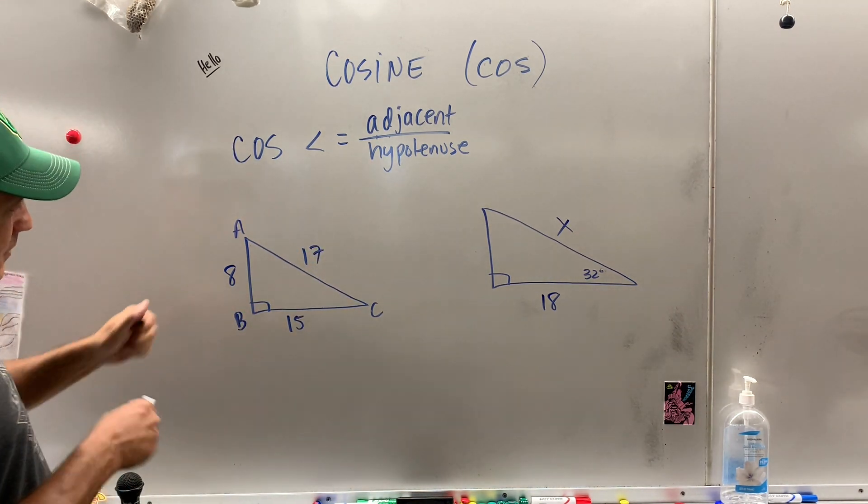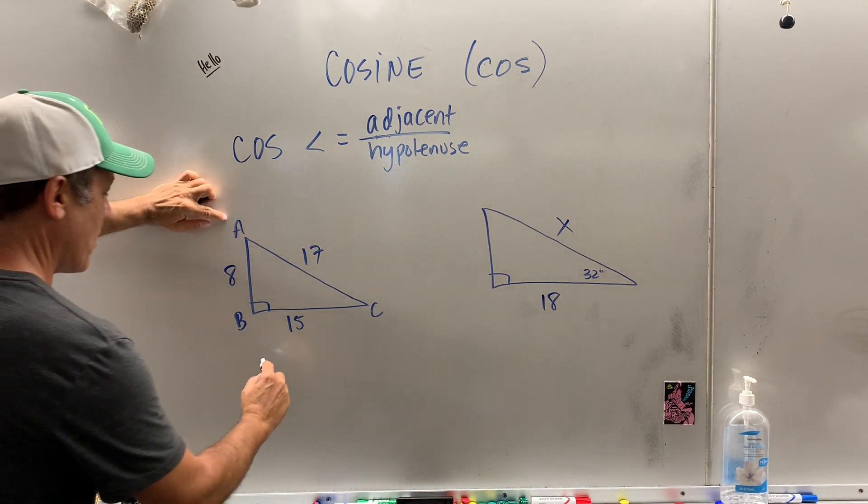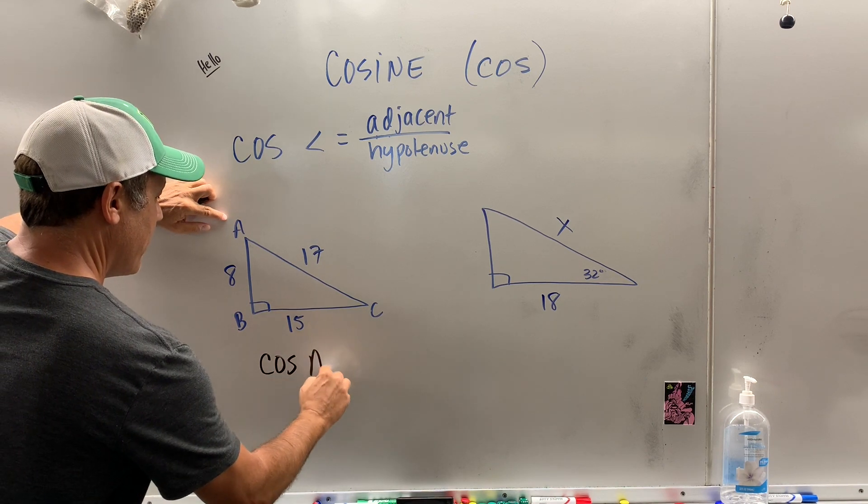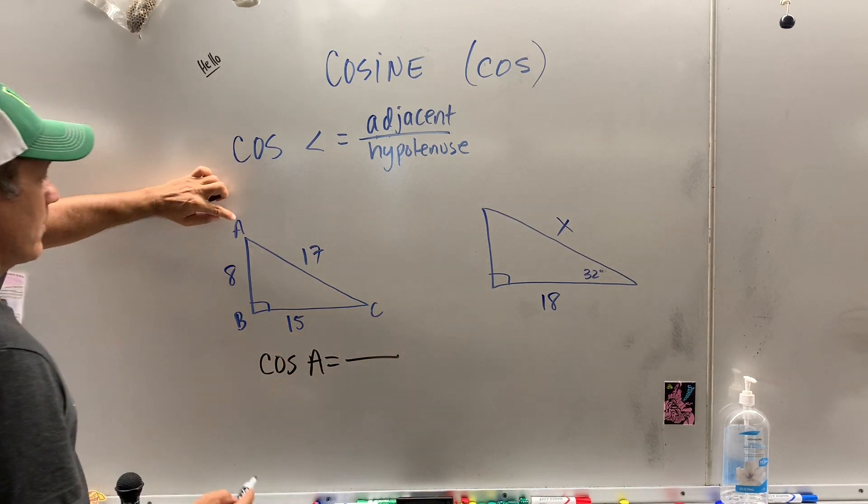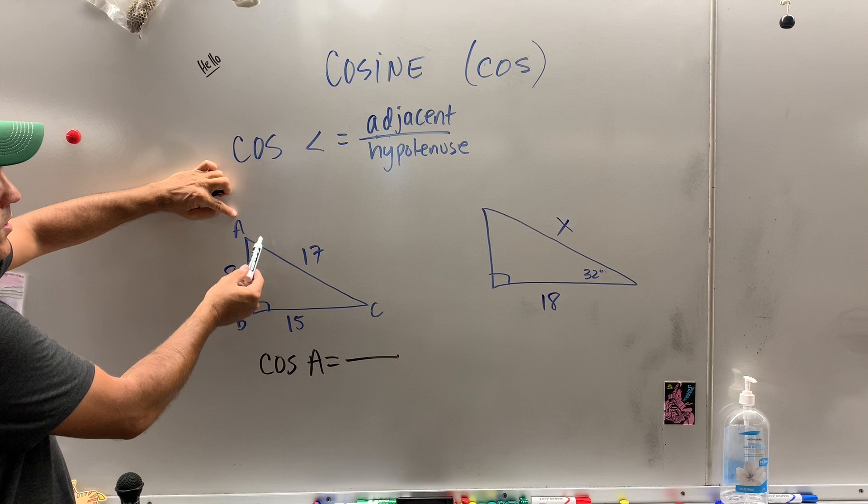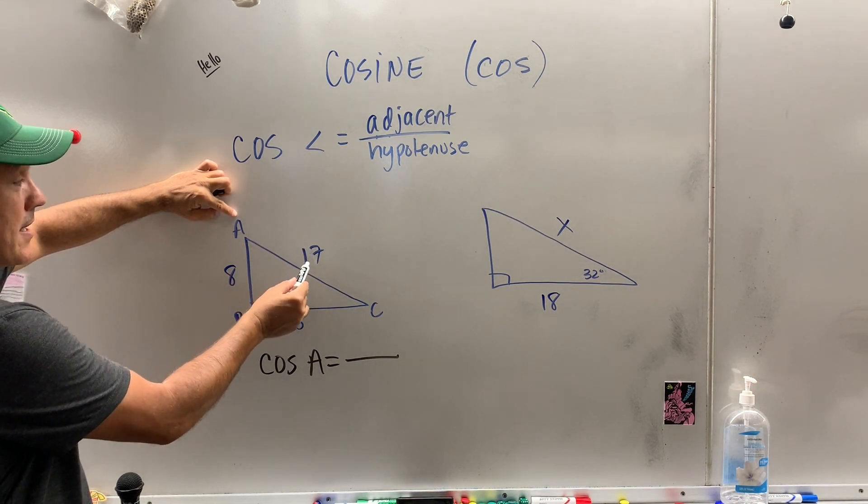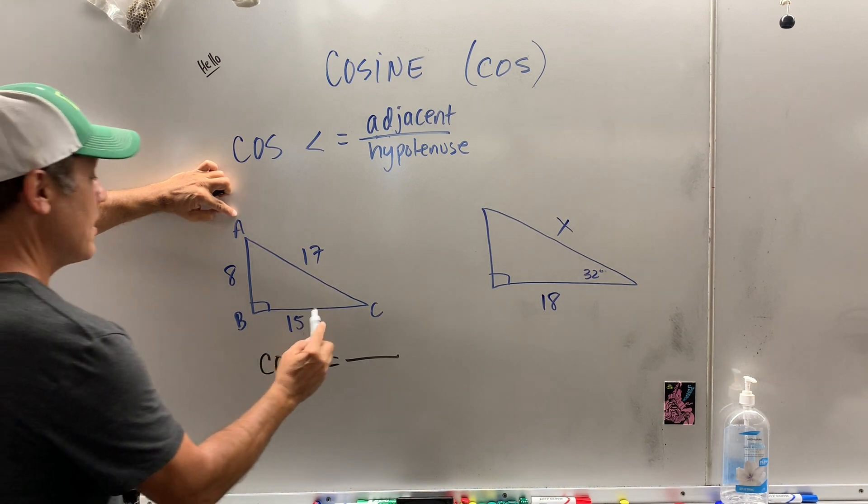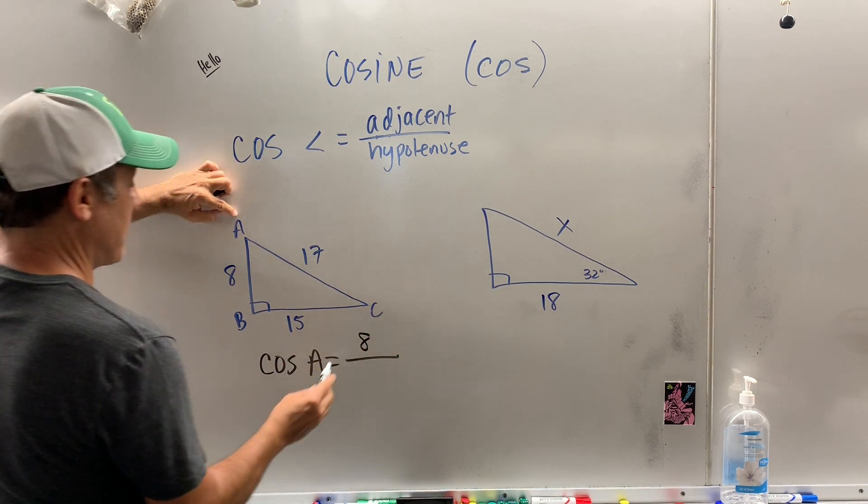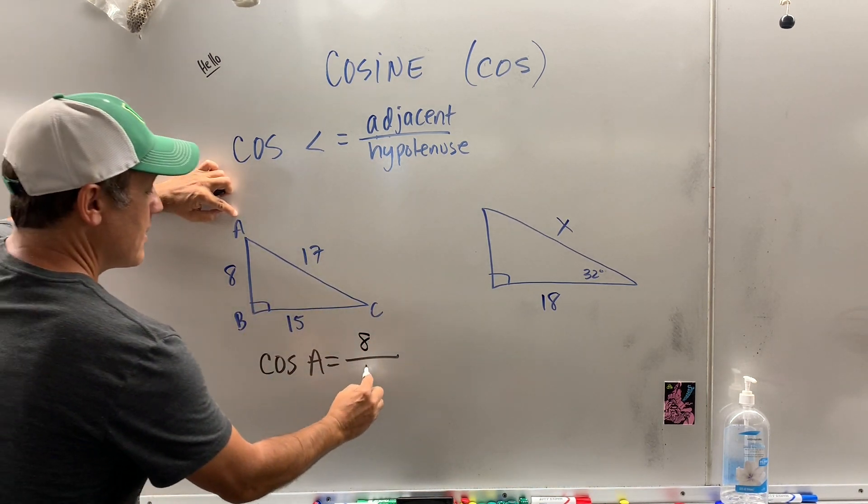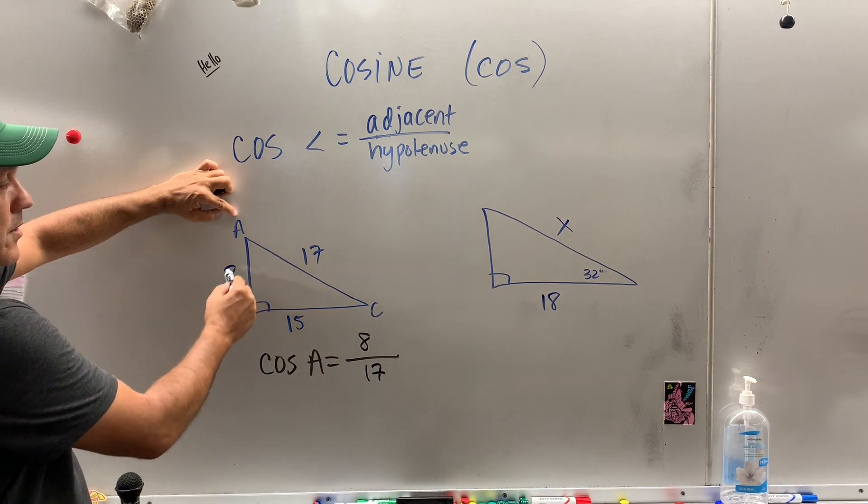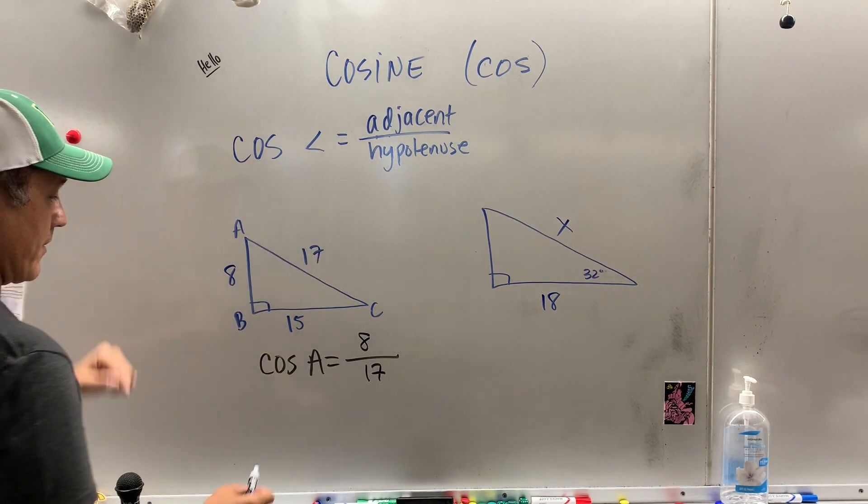So, I have a triangle for you. If we want to find the cosine of A, that's a ratio. So you put your finger on A, adjacent. Well, both these sides are adjacent, but 17 is the hypotenuse, so it can't be the adjacent. So the adjacent is 8, and the hypotenuse, what we just said, is 17. So the cosine of an angle is equal to the ratio 8 over 17.